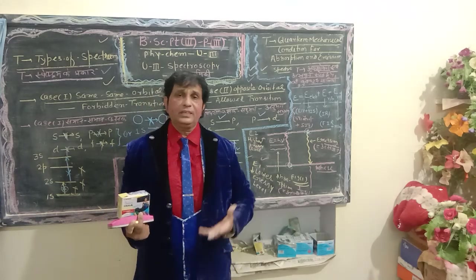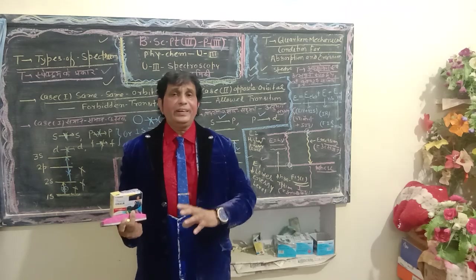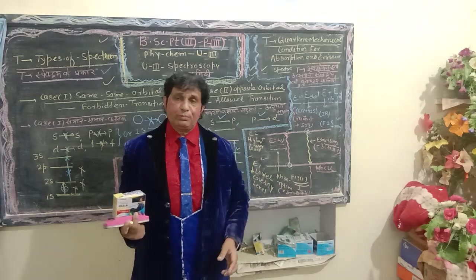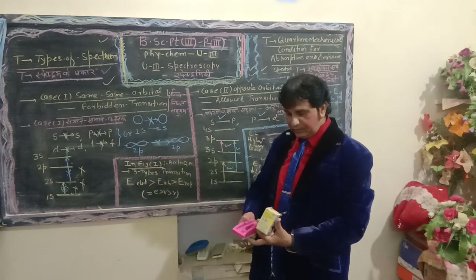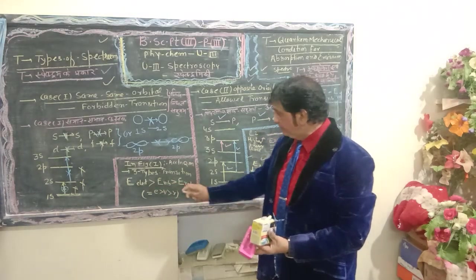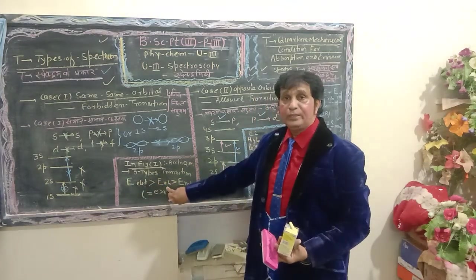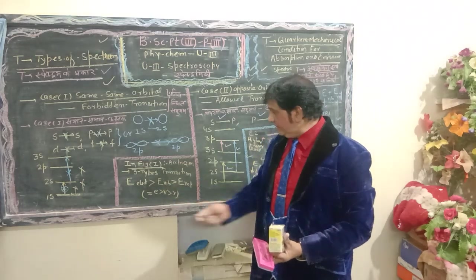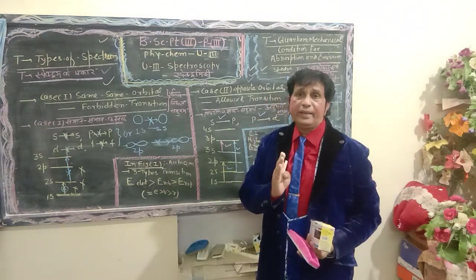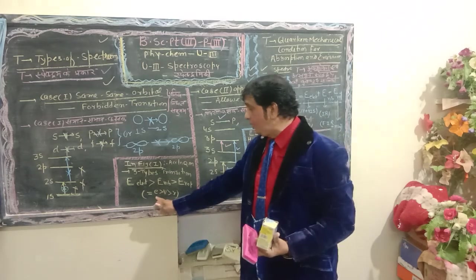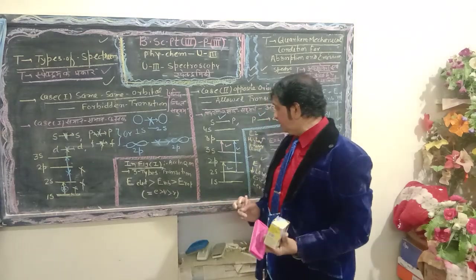Regarding the order of energy among these three transitions: electronic energy is greater than vibrational energy, which is greater than rotational energy — that is, E(electronic) > E(vibrational) > E(rotational). Please remember this in the compact form EVR: E for electronic, V for vibrational, R for rotational.